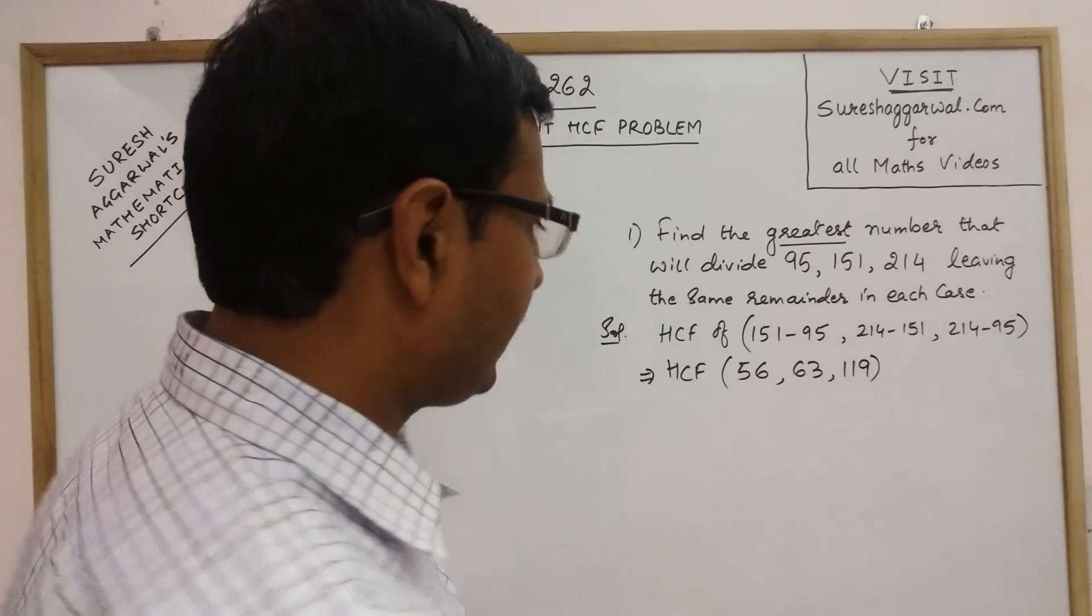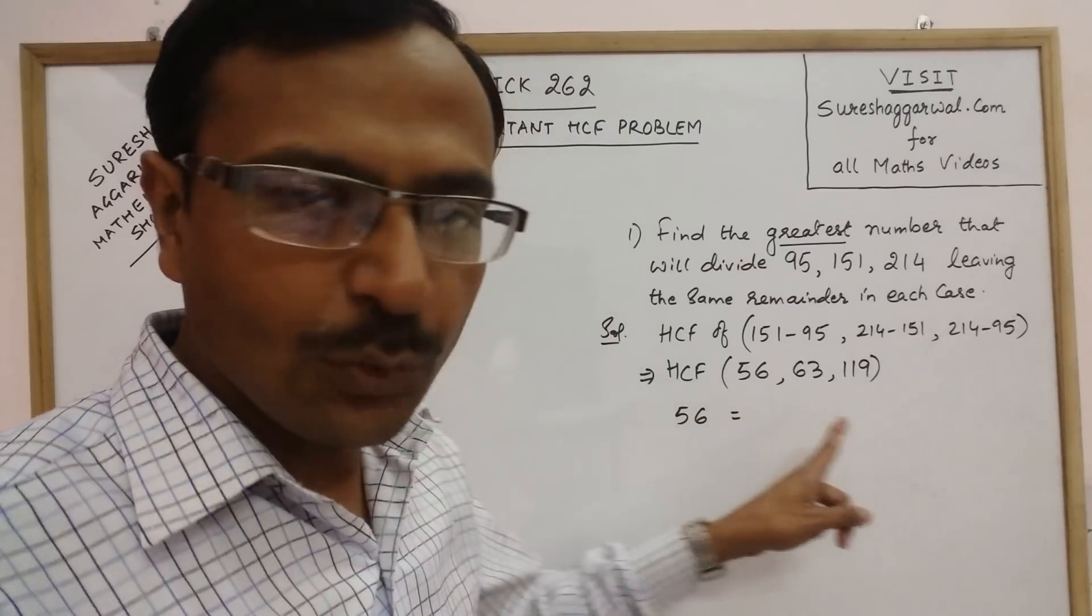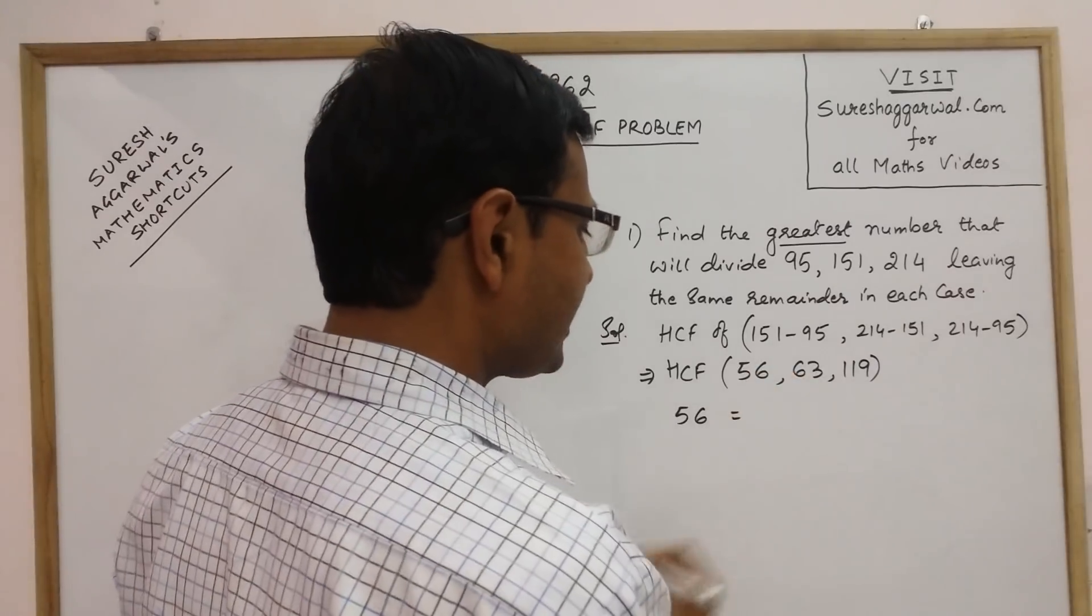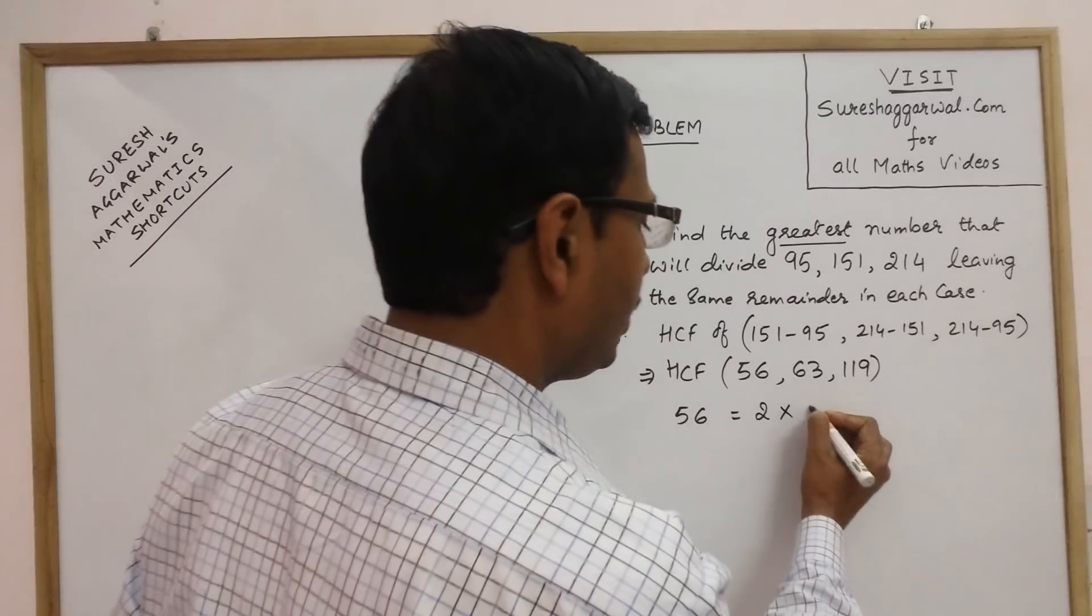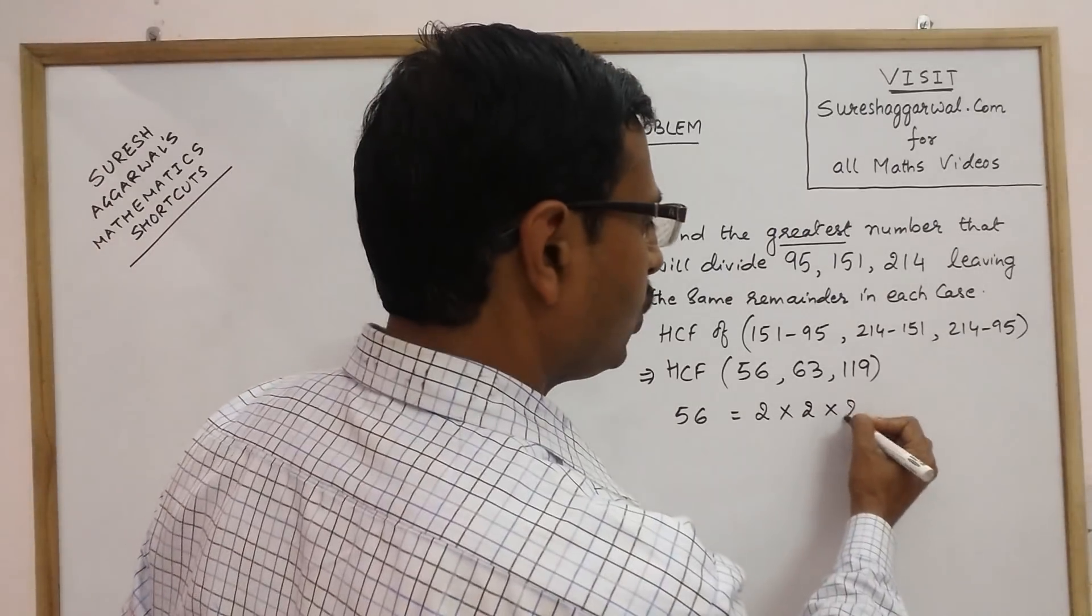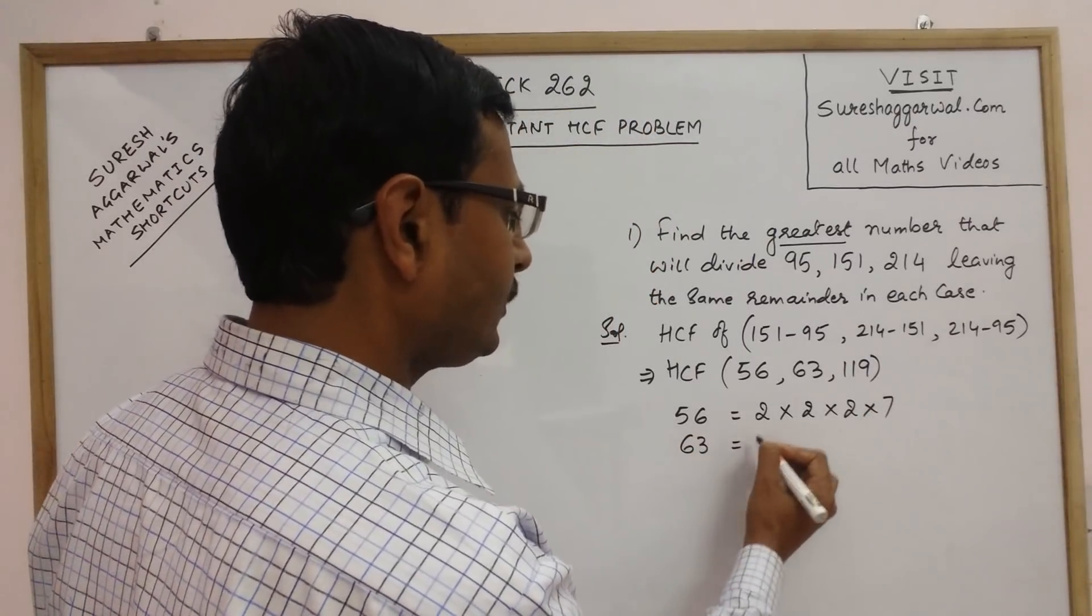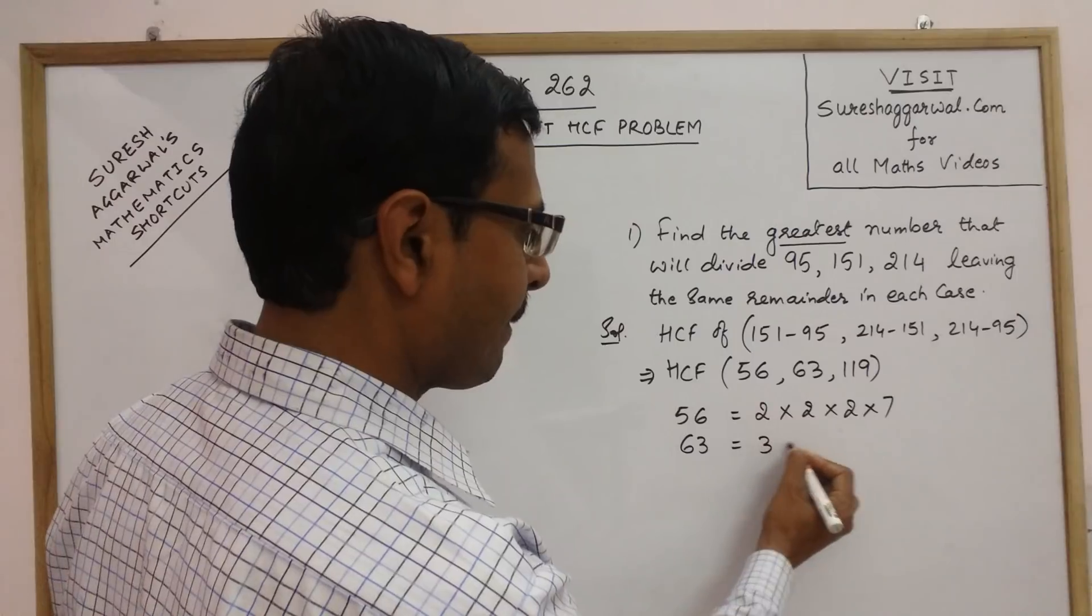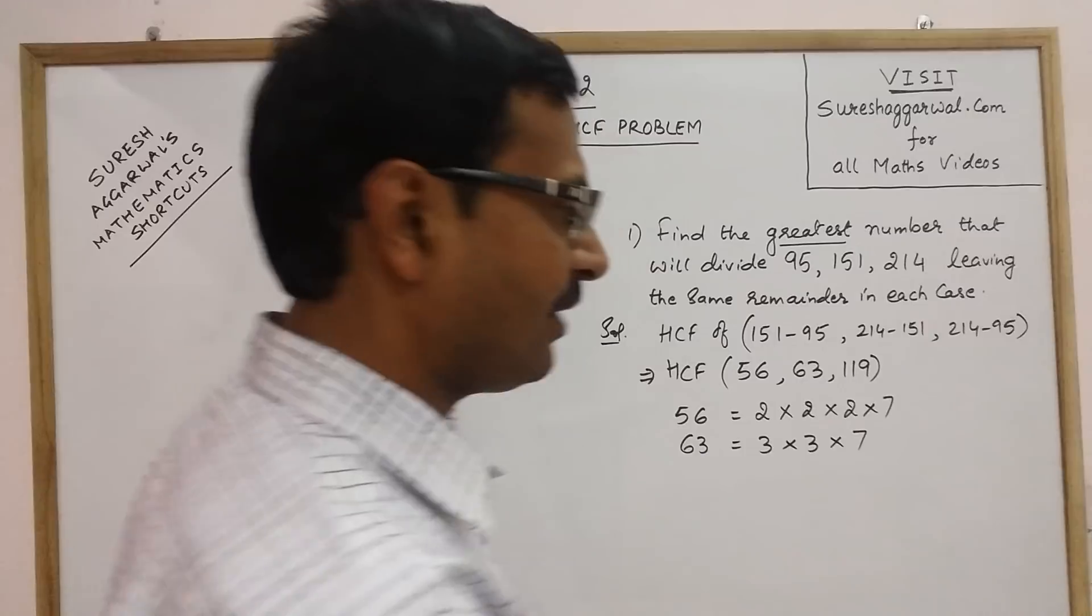For finding the HCF, make use of the traditional method because these are easy to factorize. 56 means 2. The remaining number is 28, again 2. Remaining number is 14, again 2 and 7. Similarly, 63, this is divisible by 3, gives 21, again 3 and 7.